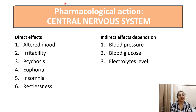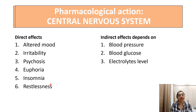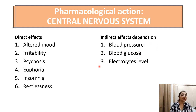Effect on the central nervous system — there are two types: direct and indirect effects. Direct effects include altered mood, irritability, psychosis, euphoria, insomnia, and restlessness. Indirect effects depend on blood pressure, blood glucose level, and electrolyte levels; alterations in these parameters affect CNS function in the patient.